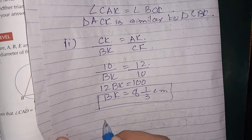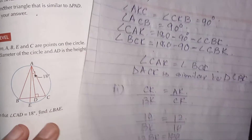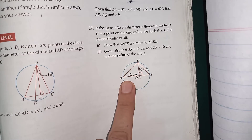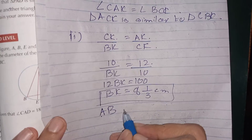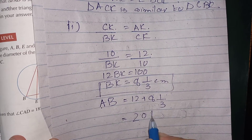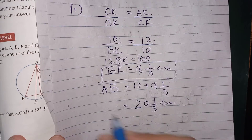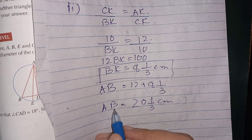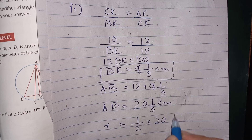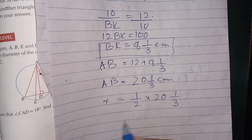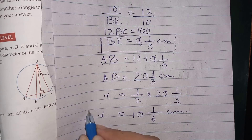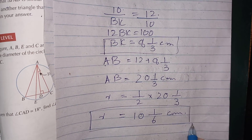Now AB is the diameter, so AB equals AK plus BK, which equals 12 plus 8 and one-third, giving AB equal to 20 and one-third centimetres. The radius is half of AB, so the radius equals half of 20 and one-third, which is 10 and one-sixth centimetres.